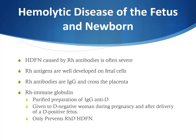Hemolytic disease of the fetus and newborn may be caused by Rh antibodies. Rh antigens are well developed on fetal cells, and Rh antibodies are IgG and cross the placenta. The treatment is preventative using Rh immunoglobulin, known as RhoGAM — a purified preparation of IgG anti-D given to Rh-negative women during pregnancy and after delivery of an Rh-positive fetus. This passive antibody attaches to any D-positive cells, which are then removed in the spleen. Once a woman makes active anti-D, she will attack every D-positive baby's red blood cells, and the only treatment would be intrauterine transfusion of D-negative red blood cells.